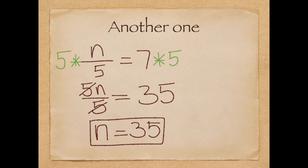And we can check is 35 divided by five seven? Yes, 35 divided by five is seven. Therefore, that's our answer.